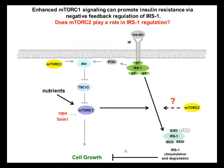Activation of mTORC1 leads to promotion of cell growth via increased protein synthesis. To prevent uncontrolled cell growth in the presence of excess nutrients, mTORC1 can downregulate insulin signals via a negative feedback loop, as shown by the bold arrows in this figure. mTORC1 and its downstream target S6K promote phosphorylation of serine sites in the insulin receptor substrate, or IRS1.